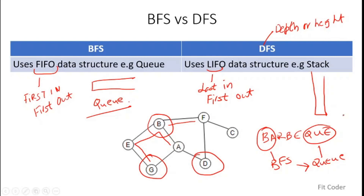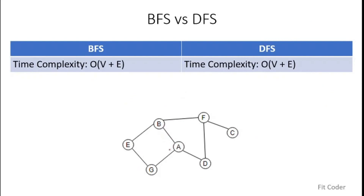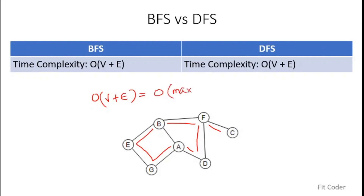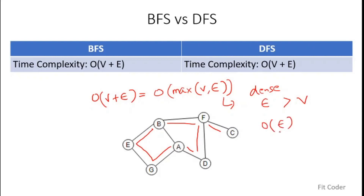In BFS or DFS, we have to traverse all the nodes and all the edges only once. So the time complexity will be O(V + E) for both BFS and DFS. When we write O(V + E), we mean O(max(V, E)). In a dense graph, the number of edges is quite greater than the number of vertices, so max(V, E) will be equal to O(E), because E is more dominant in a dense graph. So the time complexity is the same for BFS and DFS.